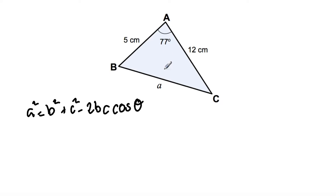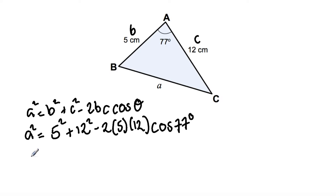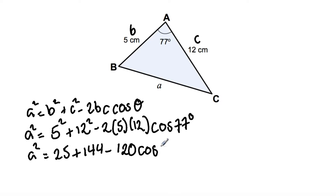a is always opposite the angle given to us. I'm going to label this side b and this side c. I'm just going to substitute all the information into the equation. So we have a squared is equal to 5 squared plus 12 squared minus 2 times 5 times 12 cos 77 degrees. Simplifying further: a squared is equal to 25 plus 144 minus 120 cos 77 degrees.